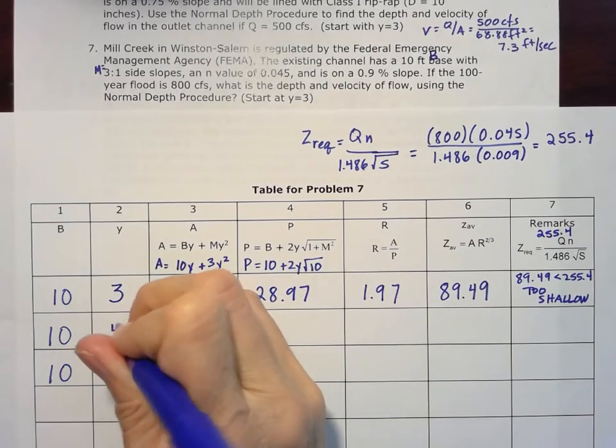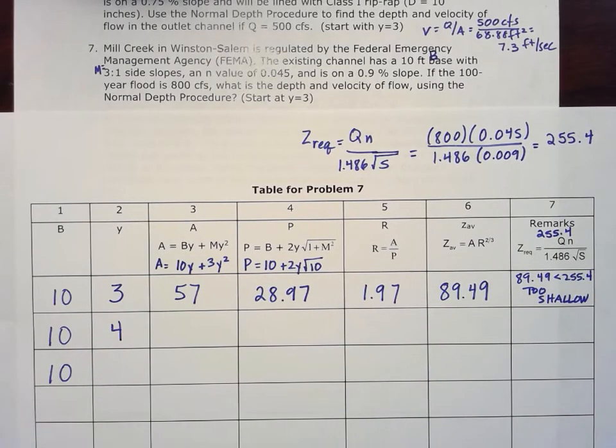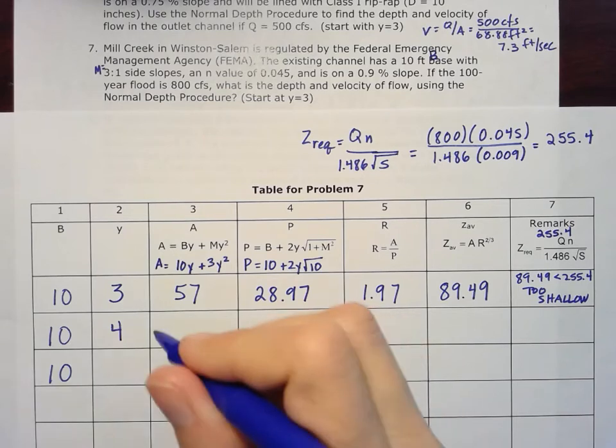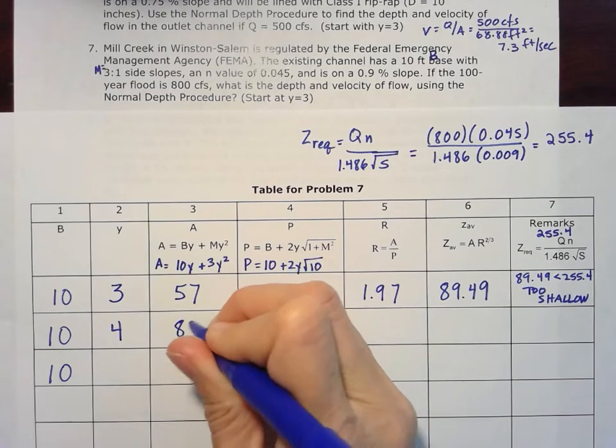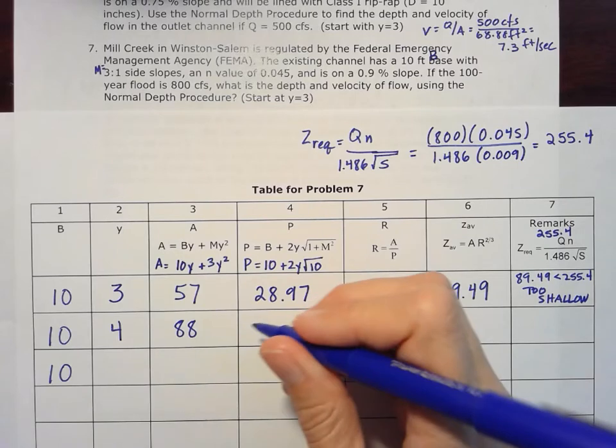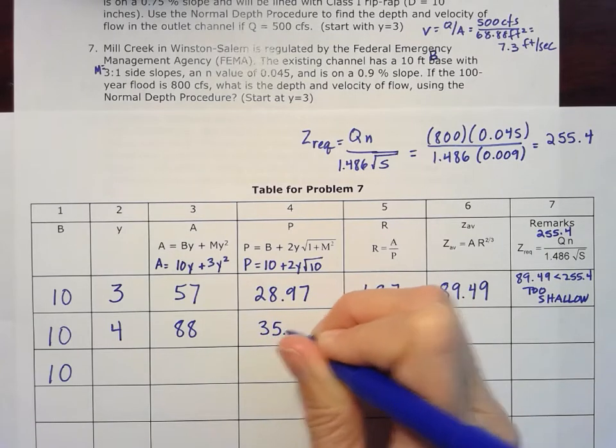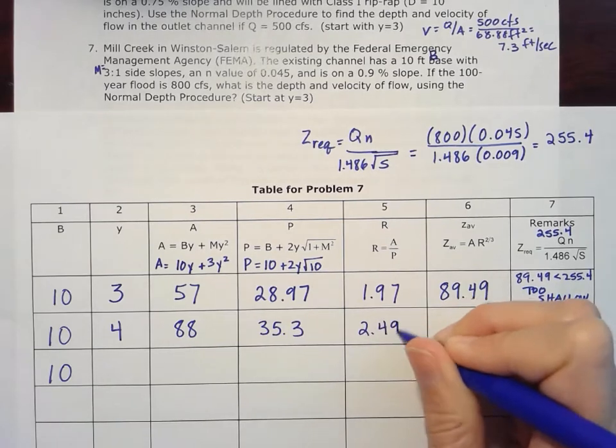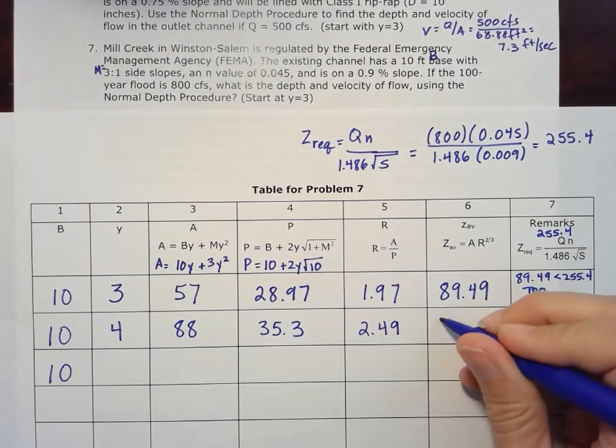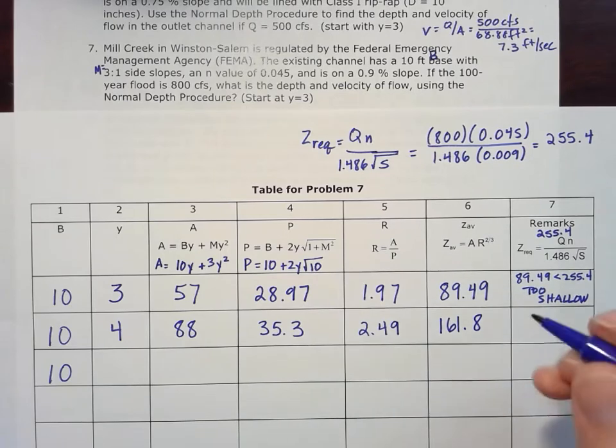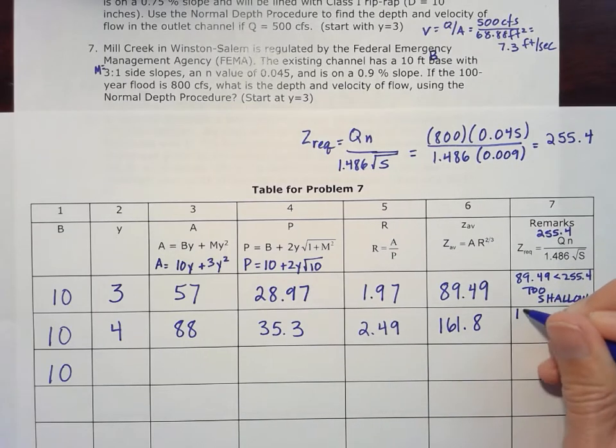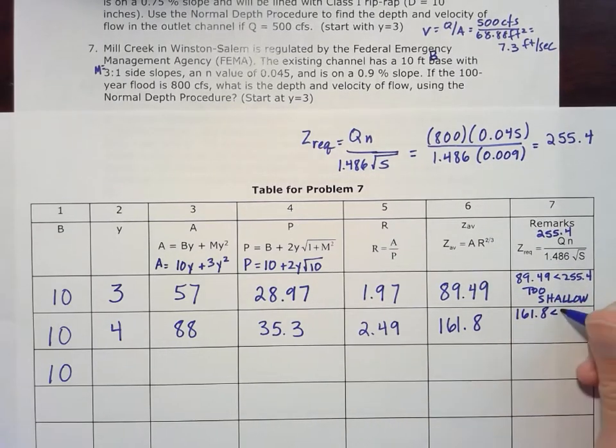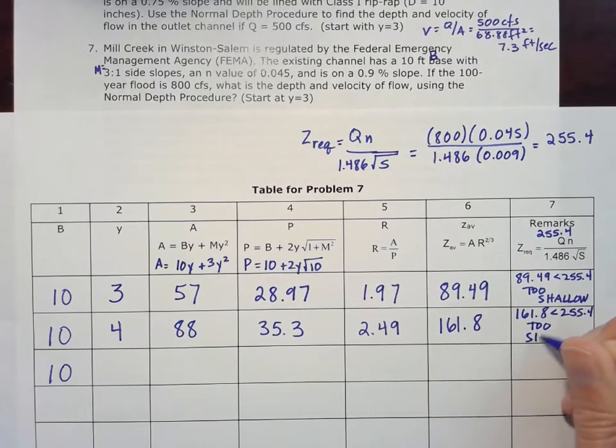So let's go up by a foot here. Instead of 3 feet deep, we'll make that 4 feet deep. So now we've got an area of 88 square feet, a wetted perimeter of 35.3 feet, hydraulic radius of 2.49, which gives us a Z average of 161.8. Still pretty small there, still too shallow. 161.8 is still less than that 255.4, so still too shallow with the 4 feet. Let's go ahead and increase that another foot.